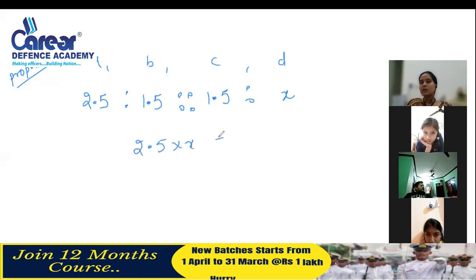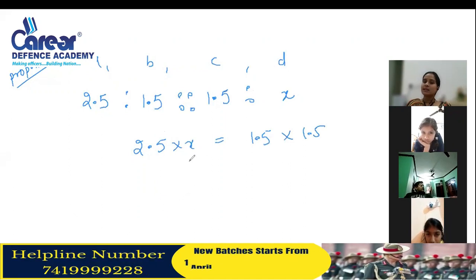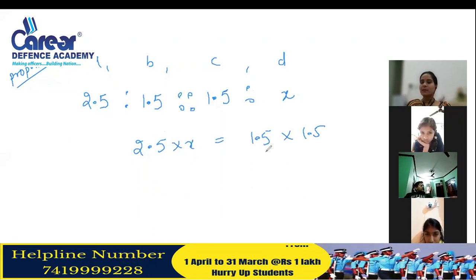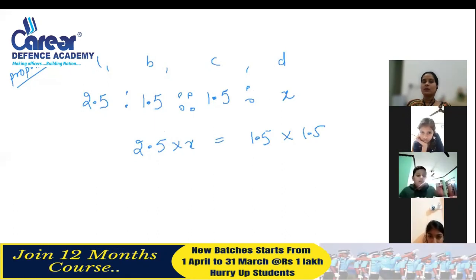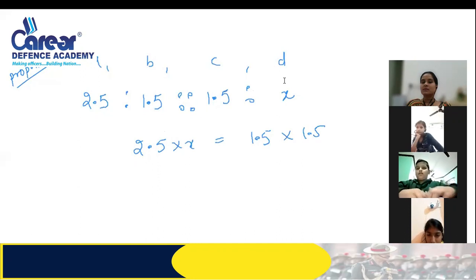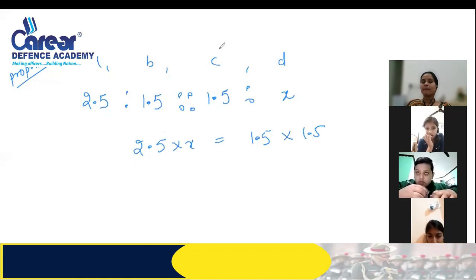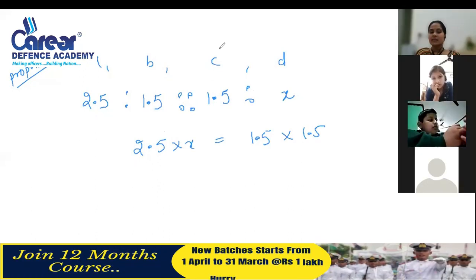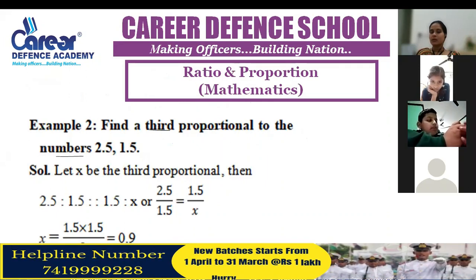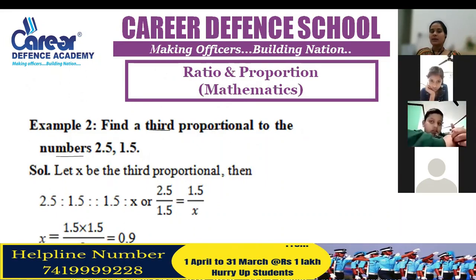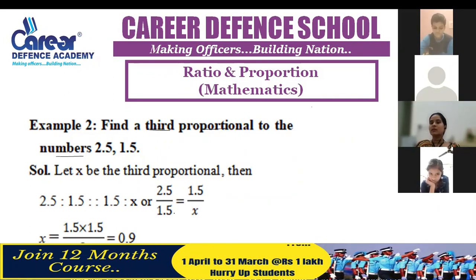We can now set up the equation: 2.5 into x equals 1.5 into 1.5. From here, x will calculate all the values, as we did in the previous question. When you solve, the value of x is 0.9.